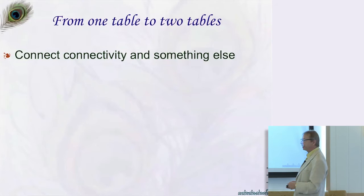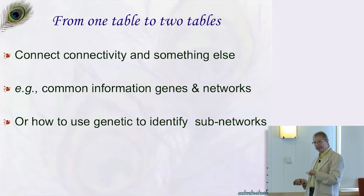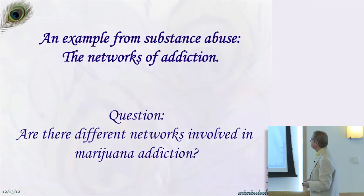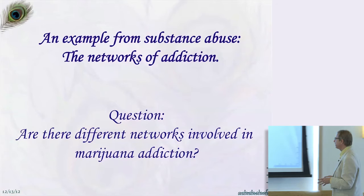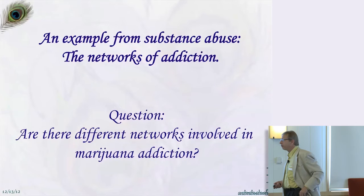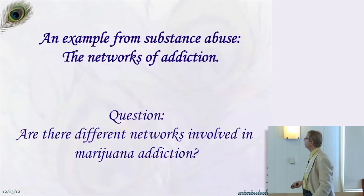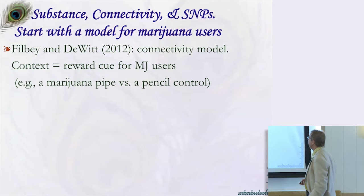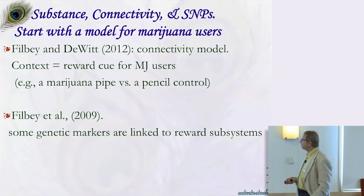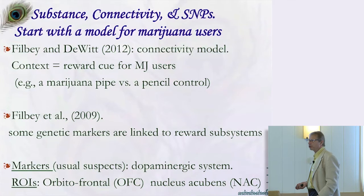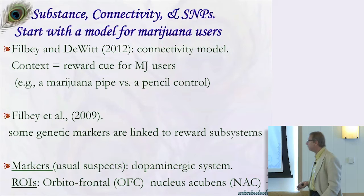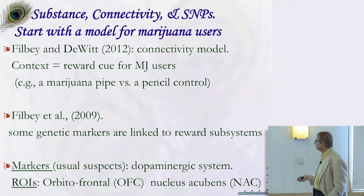Part two: from one table to two tables, where we want to connect connectivity to something else. The idea is to find common information or use external information to dissociate networks. Can we link changes in connectivity to behavior or genetic background? This work was done with Francesca Filbey, Derek Beaton, Joseph Dunlop, and David. The question is whether genetic markers are linked to brain connectivity, specifically markers around the dopaminergic system, which is where reward is mediated. The ROIs include standard regions such as orbitofrontal cortex and nucleus accumbens.